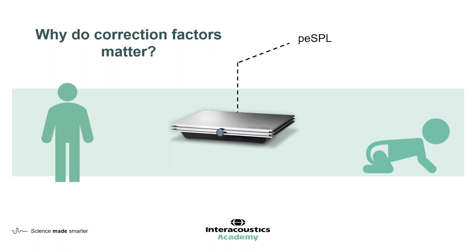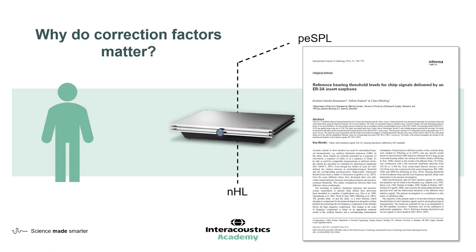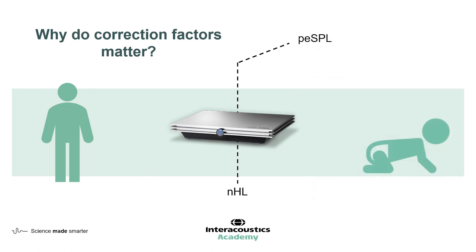Evoked potential systems should be calibrated using the correct electrical peak equivalent sound pressure level calibration of the transducer. The RETSPL values are then applied in order to convert the physical peSPL into nHL, which is a hearing sensitivity-related scale. RETSPL values are provided by the ISO standard 389-6. The CE chirp family of stimulus, which is found on the Eclipse, is not yet included in this standard, but there are independent studies which have been published on the CE chirp family which detail the RETSPL values and this conversion.